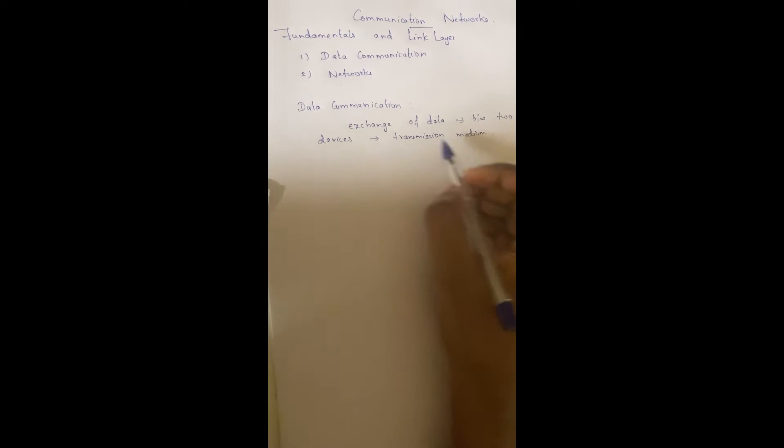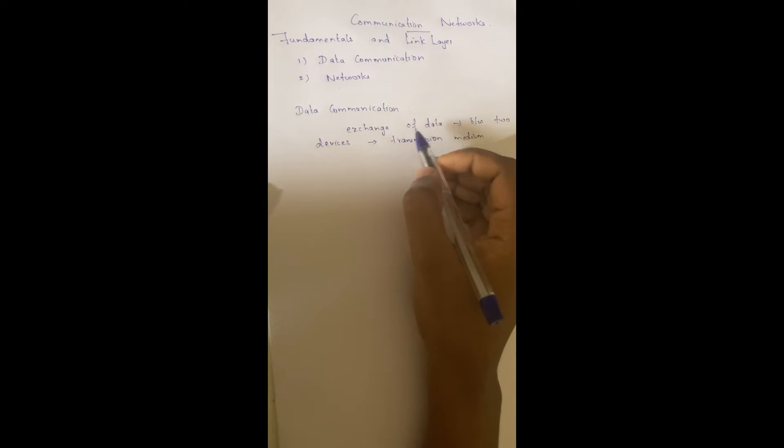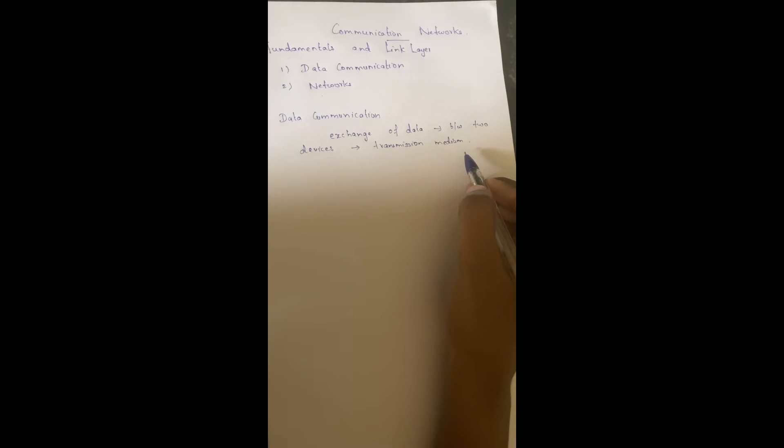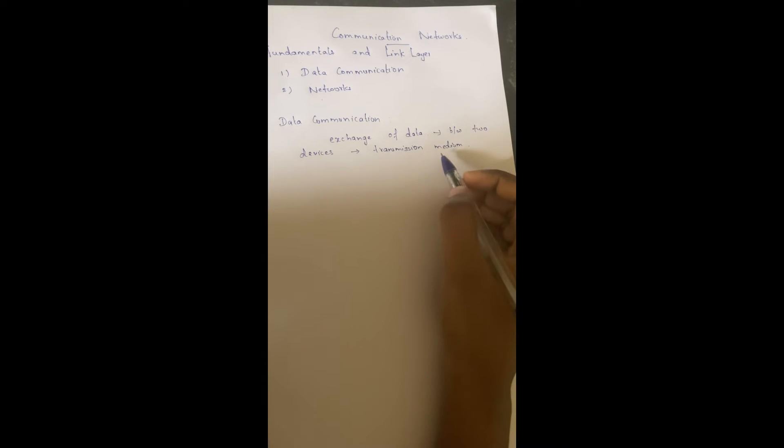The transmission medium can be wired or wireless. If it is wired, you can send through coaxial cable, fiber optic cable, or twisted pair cable. For wireless, you are having Bluetooth, Wi-Fi, etc. So data communication is the exchange of data between two devices through some transmission medium such as wired or wireless.